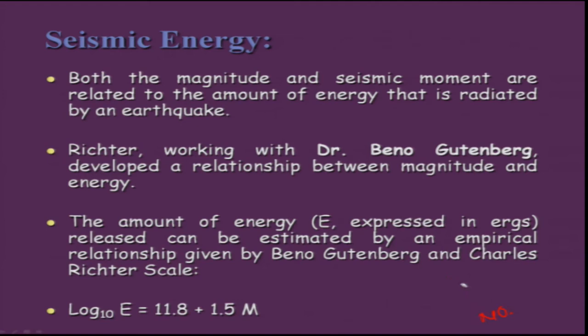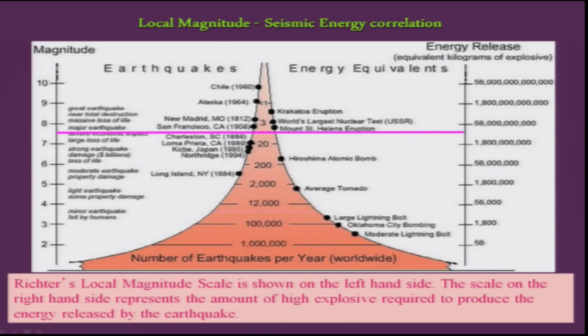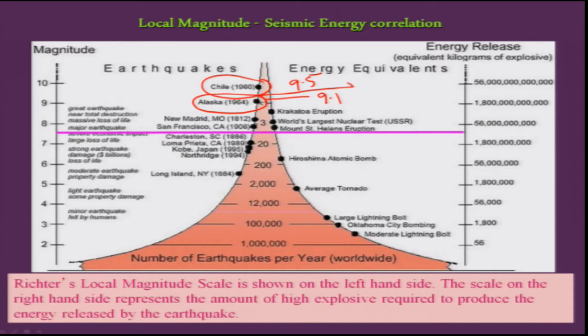This chart shows magnitude versus the amount of energy released during particular earthquakes. The 2001 earthquake occurred at magnitude 7.6 — that was the Bhuj earthquake. The 1960 earthquake released much larger energy; that was the Chilean earthquake at magnitude 9.5. The Alaskan was the second largest, but if the 2004 Andaman-Sumatra earthquake is taken as 9.3, then it becomes the second largest.